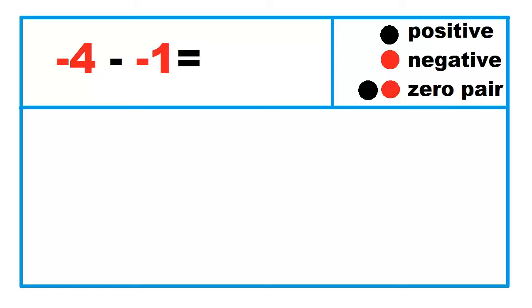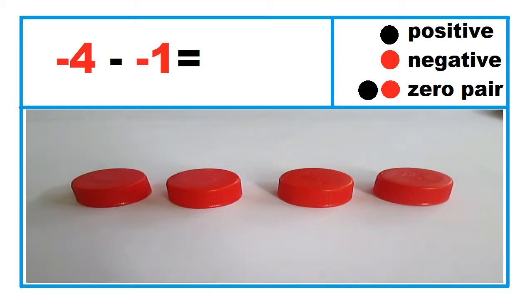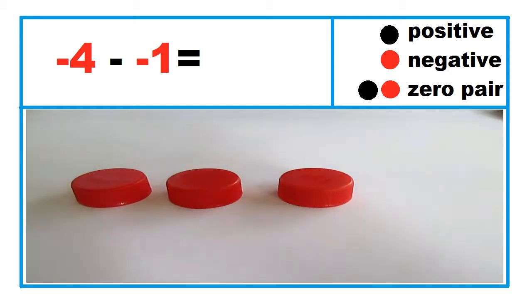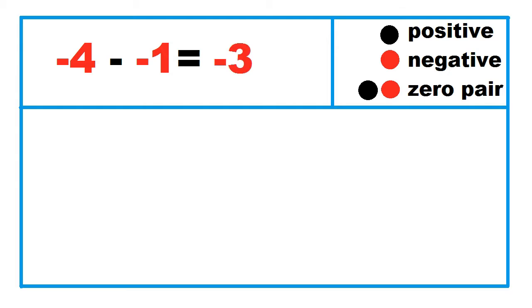Another example: negative 4 minus negative 1. From four red caps, take away one red cap. Negative 4 minus negative 1 equals negative 3.